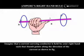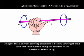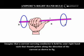Ampere's right hand rule. Imagine that a current carrying conductor is held by your right hand such that the thumb points along the direction of the current, as shown in the figure.